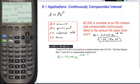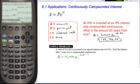$14,000 times diamond X to bring up base E to the 0.068 times 7, and what we see is a value of $22,534.72.